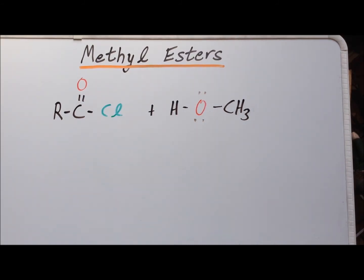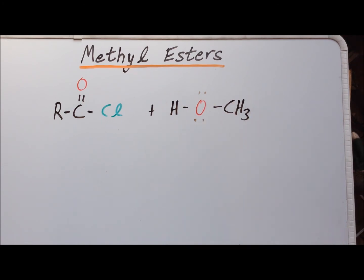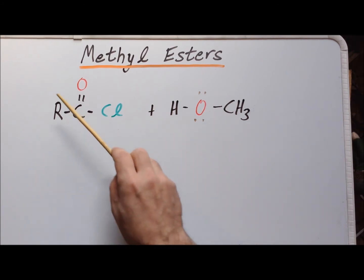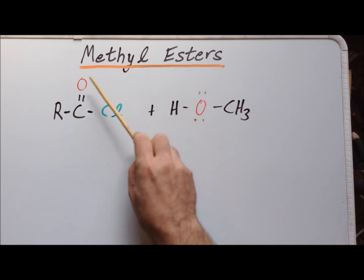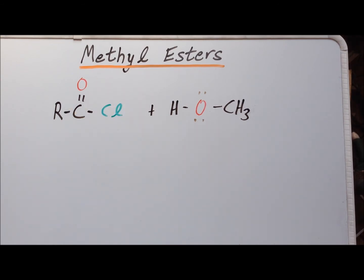If we intend to synthesize a methyl ester, the alcohol that we are going to use is going to be methanol, methyl alcohol. And to expedite synthesis, instead of using a carboxylic acid, we are going to use the acid chloride.